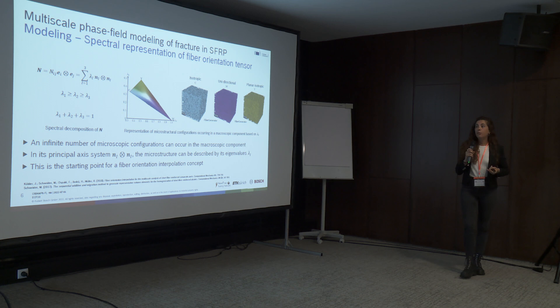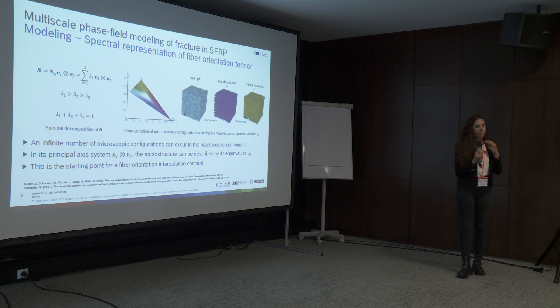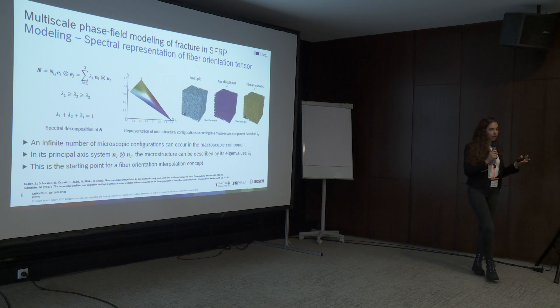All real possible microstructures can be plotted in a two-dimensional graph as a function of lambda 1 and lambda 2. The result is a triangle with three vertices, each representing an extreme microstructure configuration: isotropic, unidirectional, and planar isotropic. All real possible microstructures can be represented by a fiber orientation tensor lying inside this triangle.